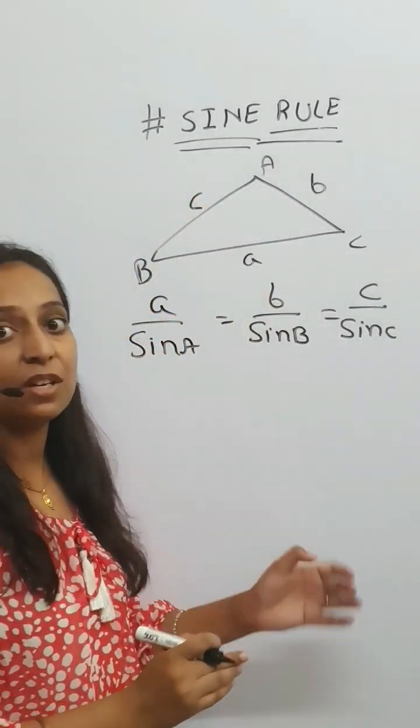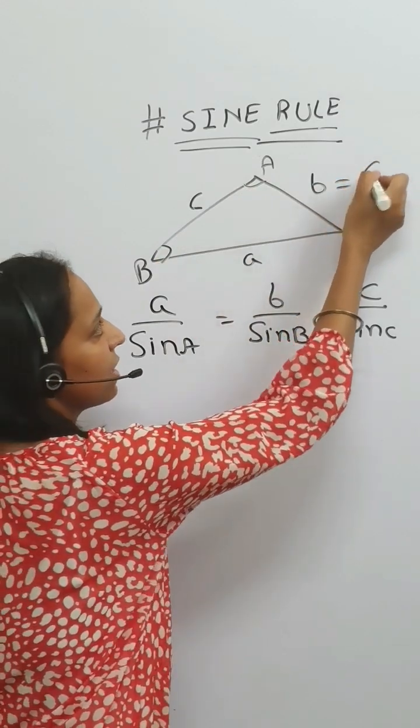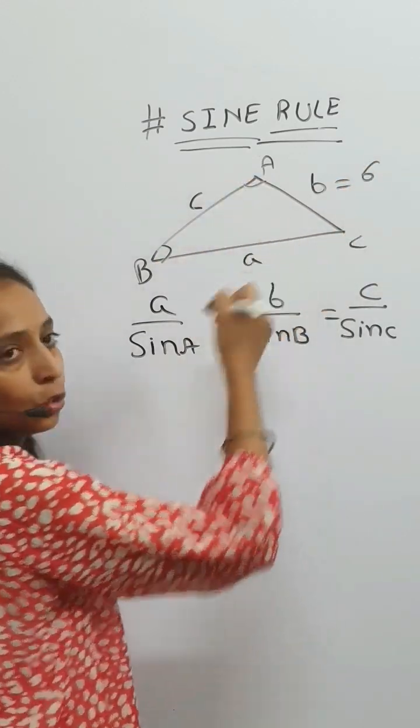We can use this sine rule to calculate when two angles and any one side are given - we can then calculate the other two sides.